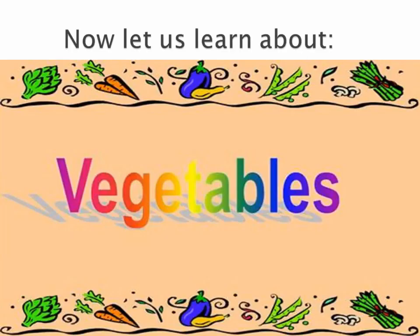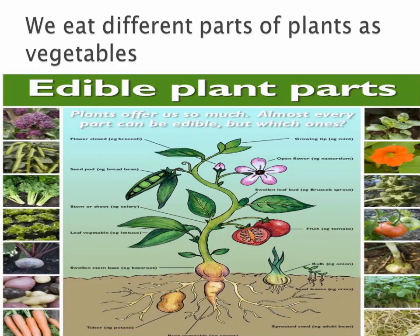Let us now learn about vegetables. We eat different parts of plants as vegetables. Like we eat potatoes, which is a stem. We eat tomatoes, which is a fruit. We eat cauliflower, which is the flower. We eat these parts as vegetables.